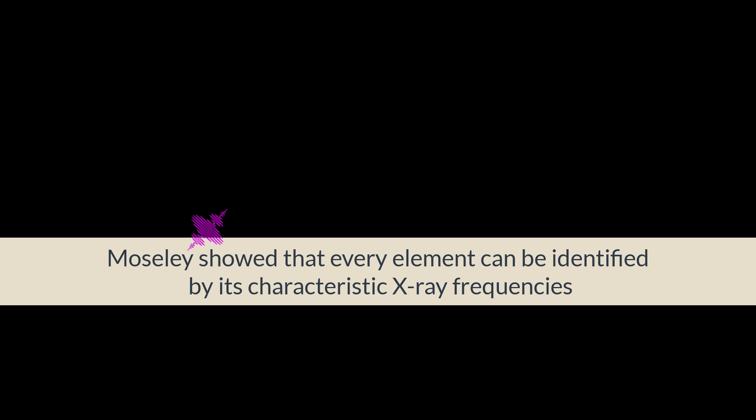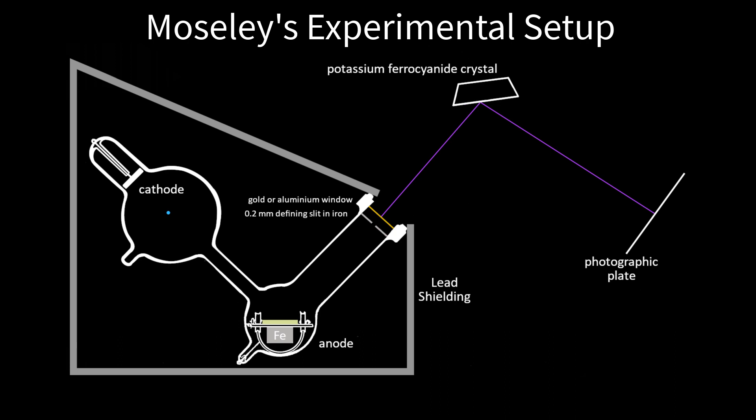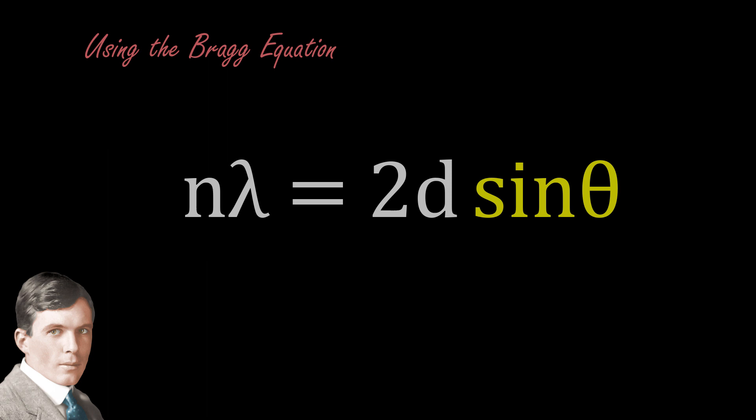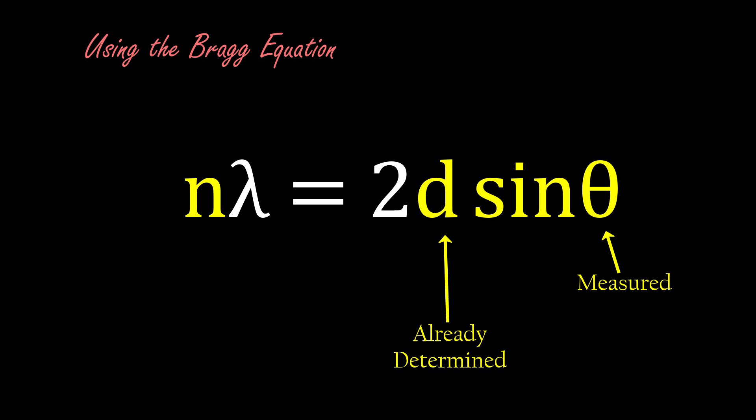Moseley contained the X-rays using lead shielding, allowing one narrow beam to emerge. He measured the reflection angle theta from a crystal angle to reflect X-rays at the greatest intensity. The Bragg equation gave him the wavelength of the X-rays, because he had already determined D, the spacing between layers of atoms in the crystal, and the crystal was already known to reflect strongly in its first three orders, with the third most prominent, so N equals 3.